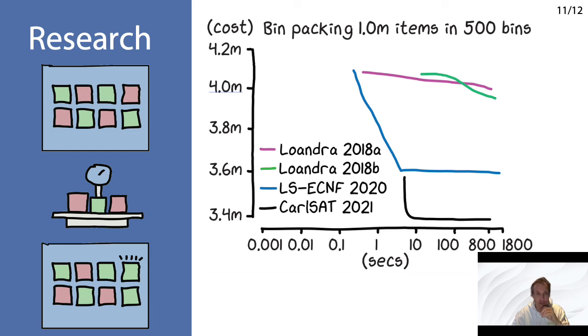The first one is a solver called Loandra in 2018, and that runs normal Boolean encoded problems through. It doesn't perform all that well on the example because the encoding of the problem is a million items, 500 bins, so you're somewhere around a megabyte region, but the encoding makes it quite a bit larger, several gigabytes in fact, and this pushes against the limits of the computer's memory, which is why it doesn't perform all that well.